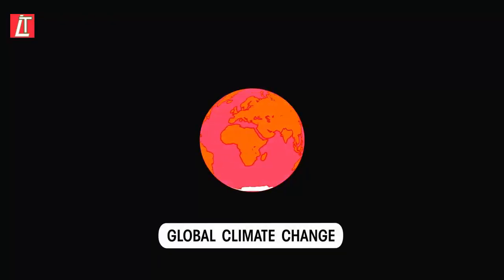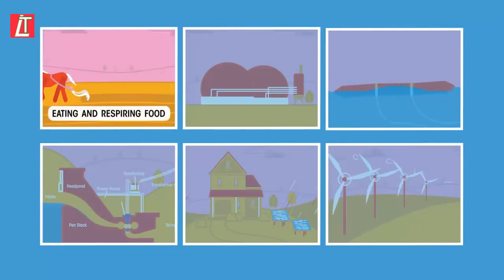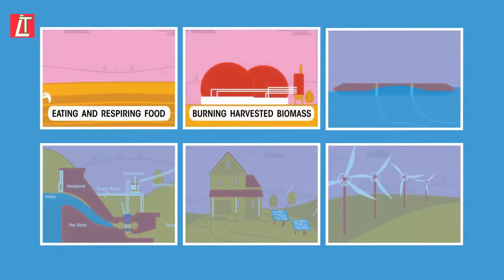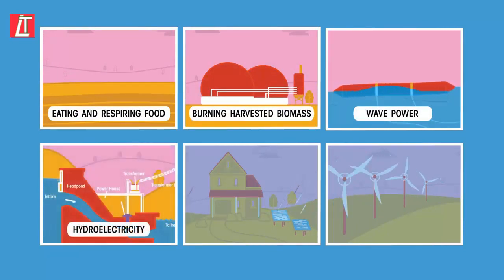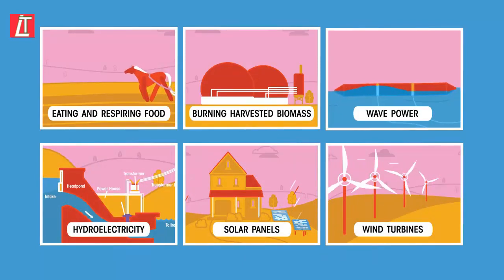So we are trying to phase out the burning of fossil fuels and rely on replenishable sources instead. Most replenishable energy sources use energy directly or indirectly from the sun through eating and respiring food, burning harvested biomass, wave power, hydroelectricity, solar panels and wind turbines. All these derive their energy from sunlight arriving on our planet. Let's have a closer look at each of them.